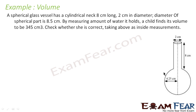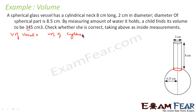The child put water in this vessel and found the volume to be 345 cm³. To check whether the child's experiment is correct, we find the volume of the vessel ourselves and see if it comes out to 345 cm³. The vessel is nothing but a cylinder plus a sphere, so: volume of vessel = volume of cylinder + volume of sphere.